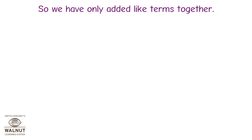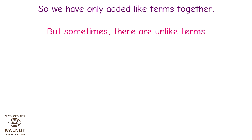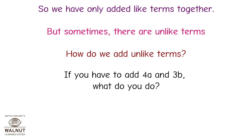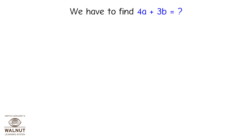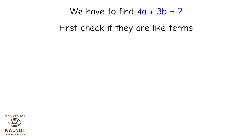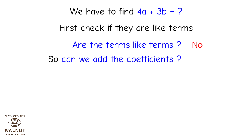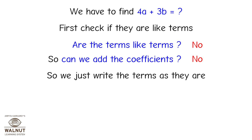Sometimes there are unlike terms — how do we add unlike terms? If you have to add 4a and 3b: first check if they are like terms. Are they? No. So can we add the coefficients? No. We just write the terms as they are. Therefore, 4a + 3b = 4a + 3b. We cannot simplify further when we have unlike terms.